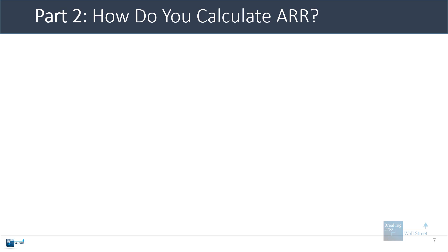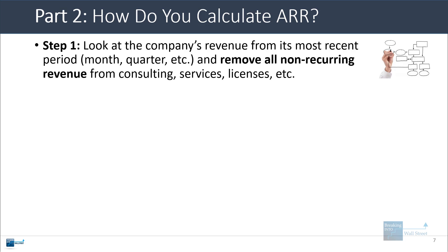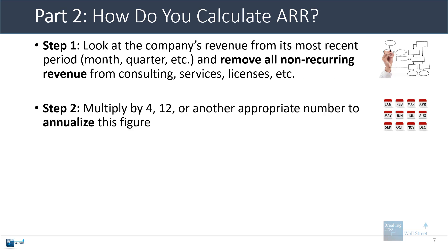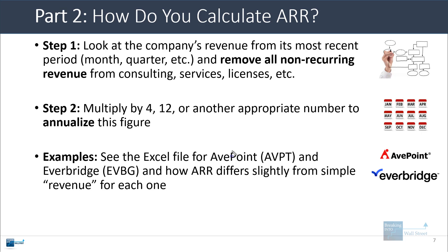So that's the basic definition. Calculating ARR for a large public company is not too complicated. You look at the company's revenue from its most recent period, remove all the non-recurring revenue from consulting services and perpetual licenses, then multiply by four or twelve or another appropriate number to annualize this figure. Let's look at another example now for Avopoint, which is another software as a service company, and I'll show you how it is a little bit different from what I just showed you for Everbridge.